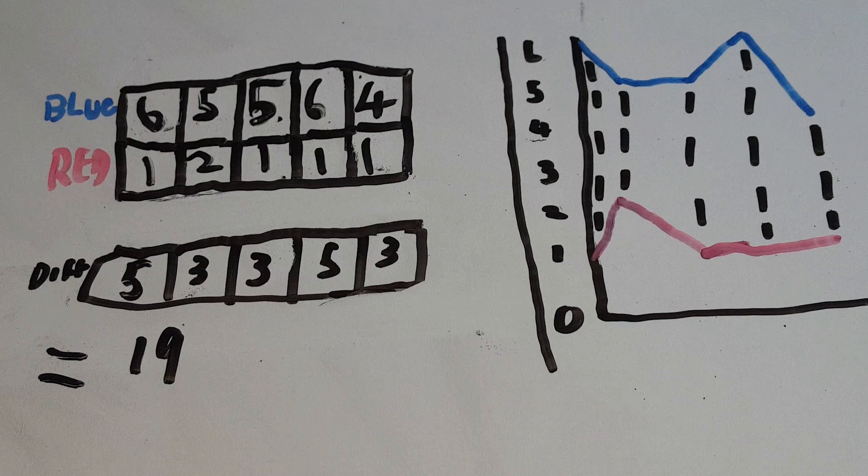Okay so that was a quick intro into how we use Euclidean distance in machine learning. Keep an eye out for our next video on dynamic time warping. Good luck!